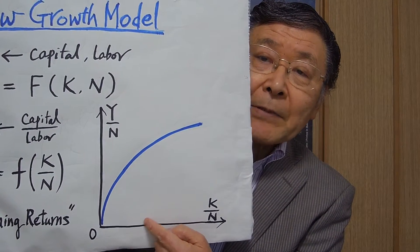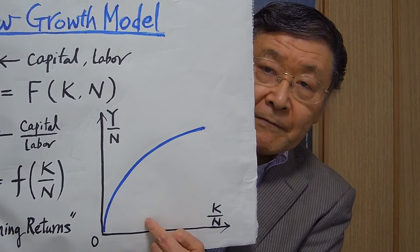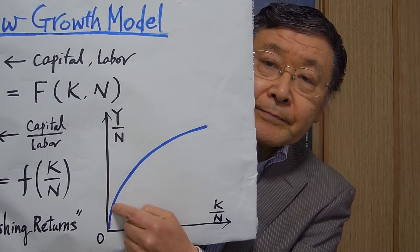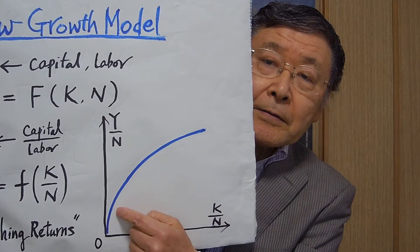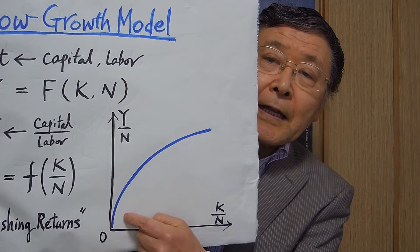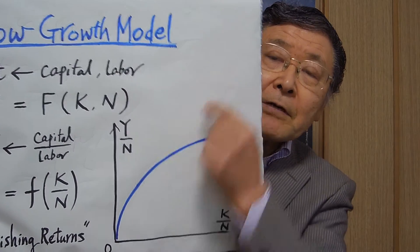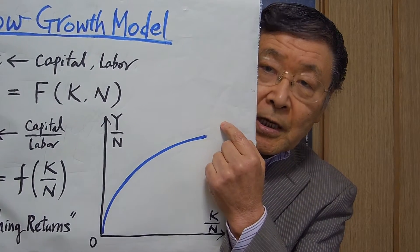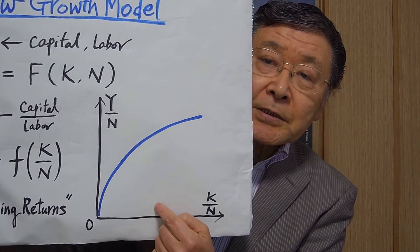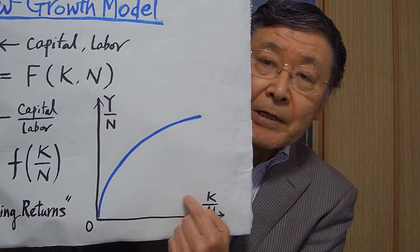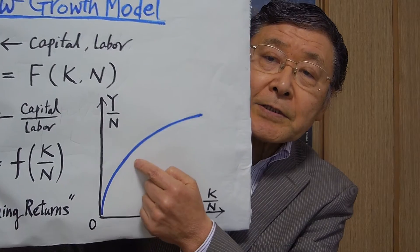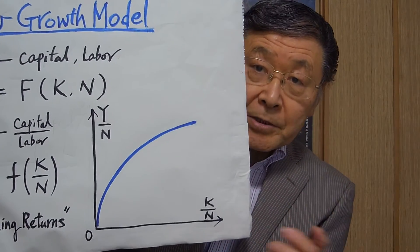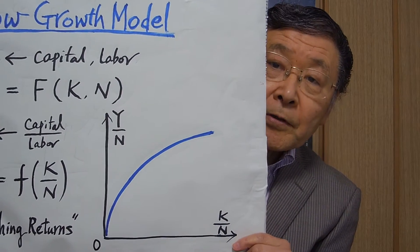As capital accumulates more and more per labor force, output per labor force tends to increase. It should look like this, not like this. Well, because of the law of diminishing returns. It says that for each increase in capital-labor ratio, the resultant increase in output becomes less and less because of the law of diminishing returns.